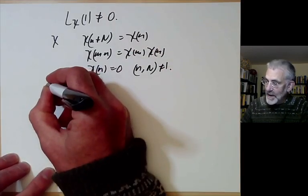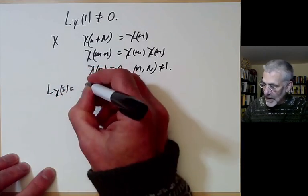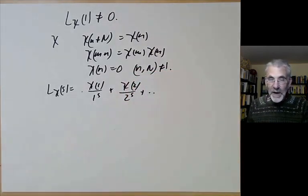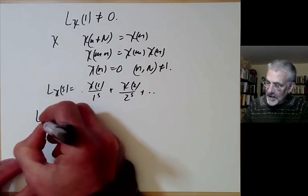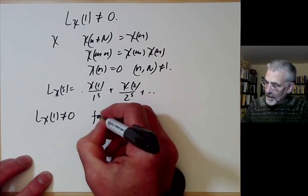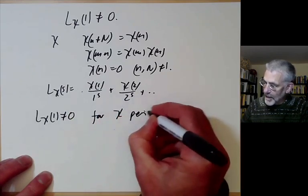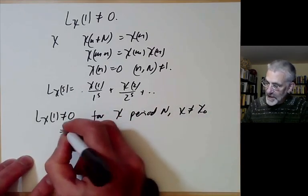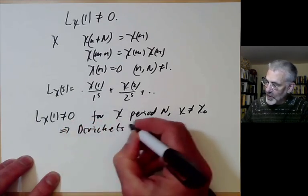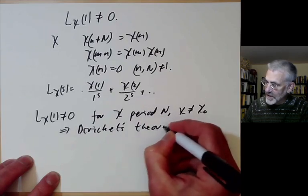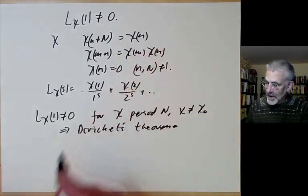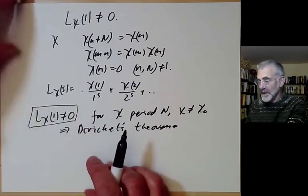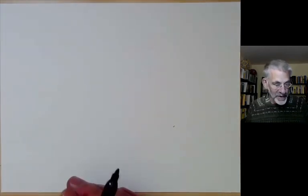The Dirichlet L-series is L(χ, s) = χ(1)/1^s + χ(2)/2^s + .... Last lecture we showed that if L(χ, 1) is non-zero for χ of period N, with χ not being the principal character (which is 1 everywhere), then this implies Dirichlet's theorem: there are infinitely many primes in arithmetic progressions with period N. So what we need to do to complete the proof is to show that these L-functions are non-zero at s equals 1.